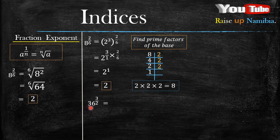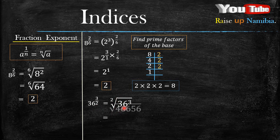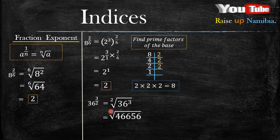How about when you have 36 raised to the power 3 over 2? Since it's in index notation, you can change it to root notation and then solve. Start inside — what is 36 raised to the power 3? That gives you a certain answer. One thing to notice: when you have a denominator of 2, you don't necessarily need to write it, because this sign already means square root. So, what is the square root of that number? It gives you 216, and that is your final answer.